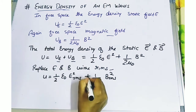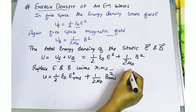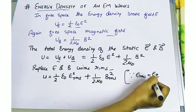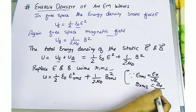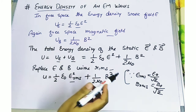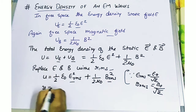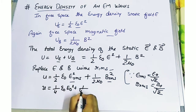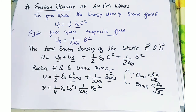Since E_rms equals E naught upon root 2, and B_rms equals B naught upon root 2, we substitute these values. This gives us: U equals one-quarter epsilon naught E₀² plus one-quarter mu naught B₀².